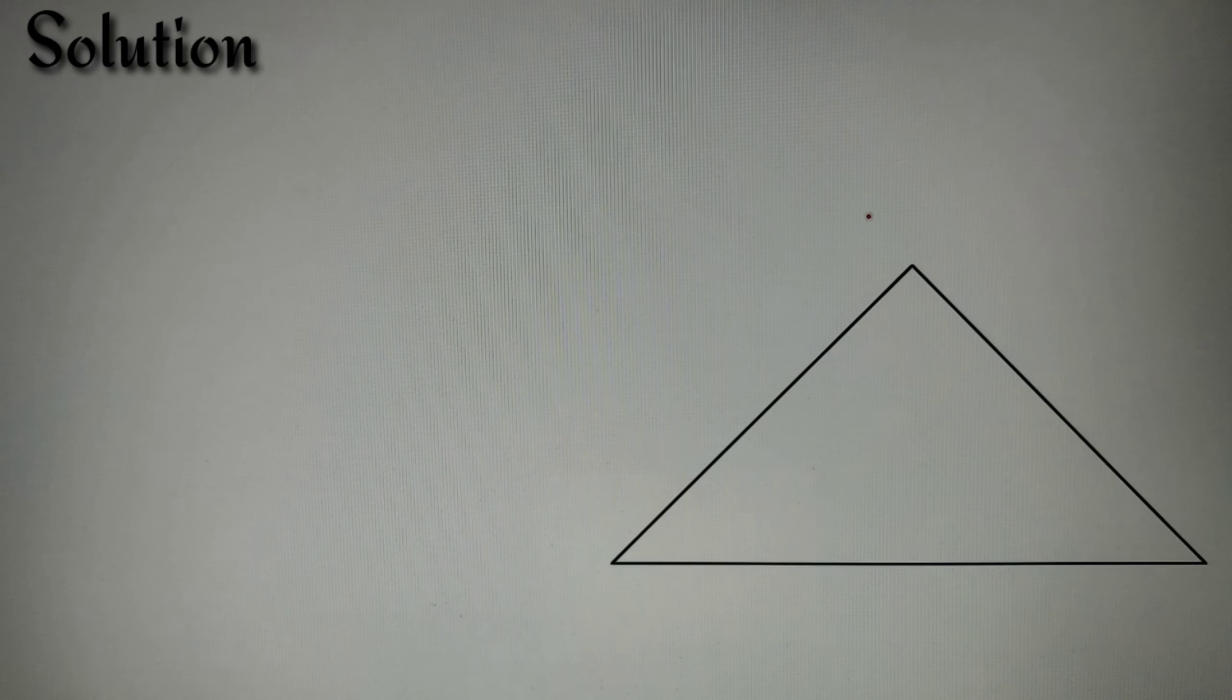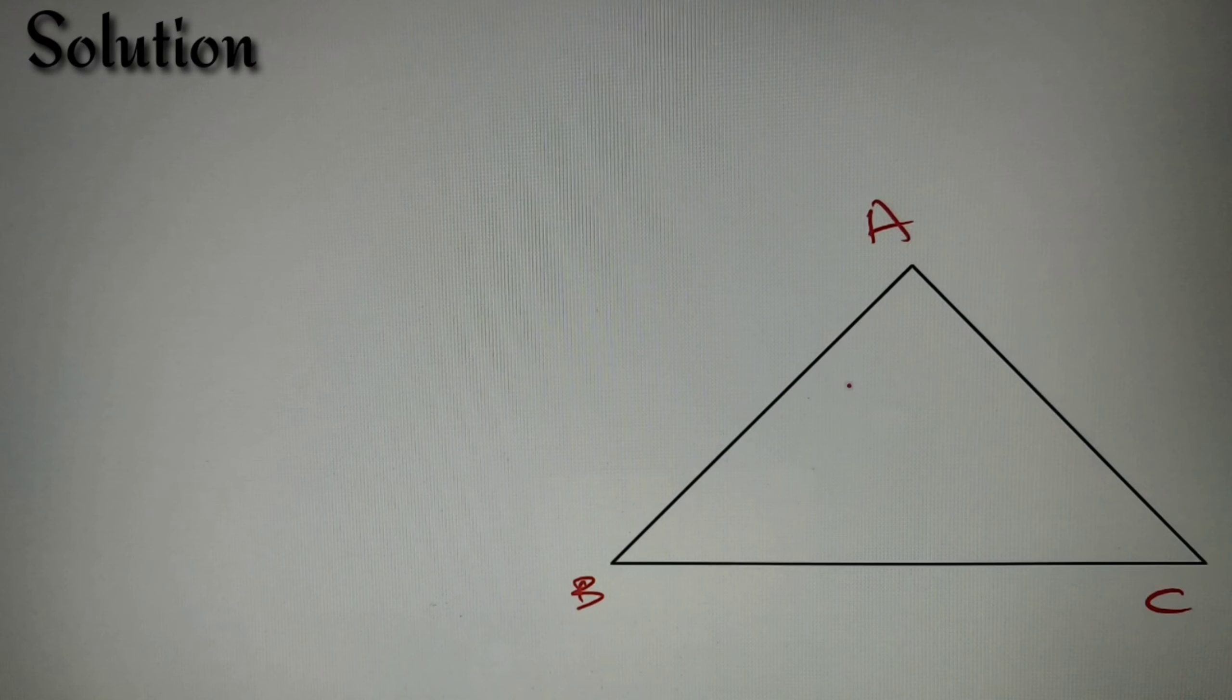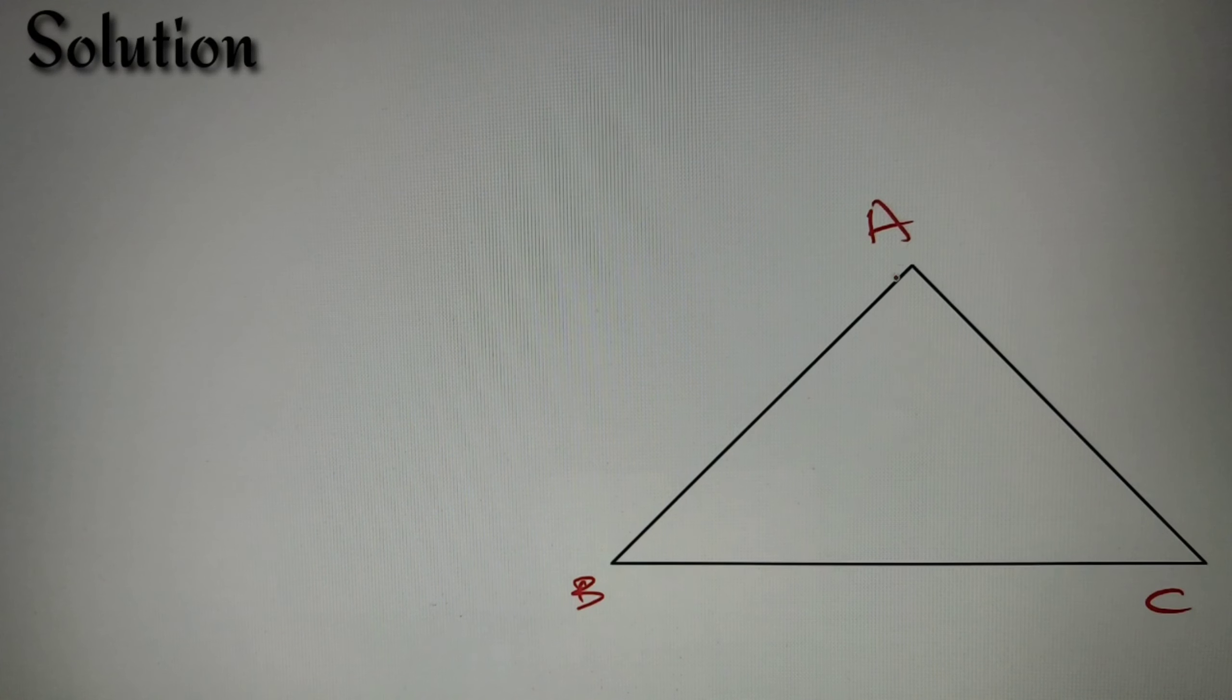So according to our given question, we are given a triangle ABC. So let's mark the vertices as A, B, and C respectively. Now we are given that the internal angle bisector of A meets BC at point D. So let's draw AD.